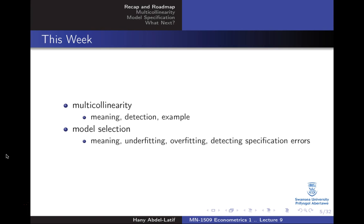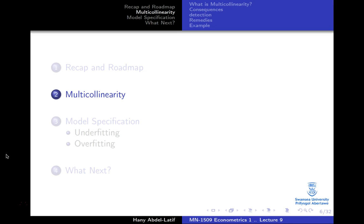We're going to discuss today multicollinearity — what it means, how to detect for multicollinearity, and we're going to see some examples. In the next part of the lecture, we will talk about model selection. So let's start with the first topic in today's lecture.